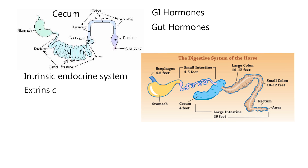The horse is classified as what's called a hind gut fermenter. In this case, when I say hind gut fermenter, the gut refers to the intestine. A hind gut fermenter has a very functional cecum that's digesting fiber and roughage. Another example of a hind gut fermenter would be a rabbit. And the pig can also be classified as a hind gut fermenter.